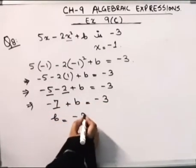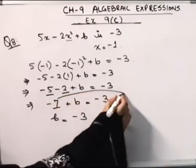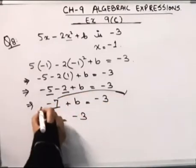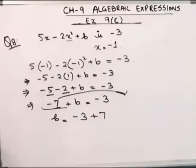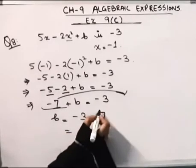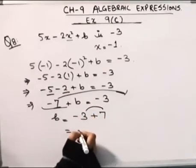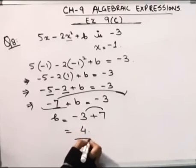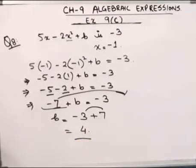b is equal to -3. I'm moving this -7 to the other side, so this -7 will become +7. This will be equal to 7 minus 3, this is equal to 4. So, the answer for the 8th question is 4.